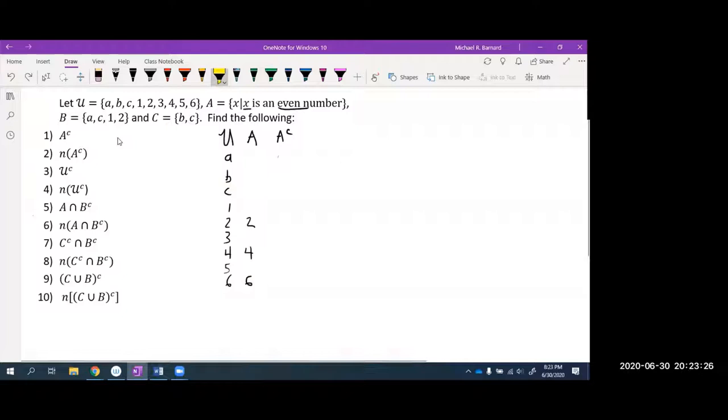And so we are missing the elements little a, little b, little c, the numbers one, three, and five. So the complement of A is a set. That's our complement.